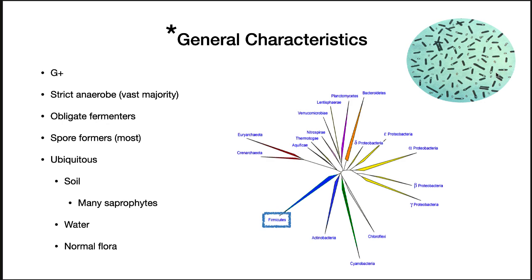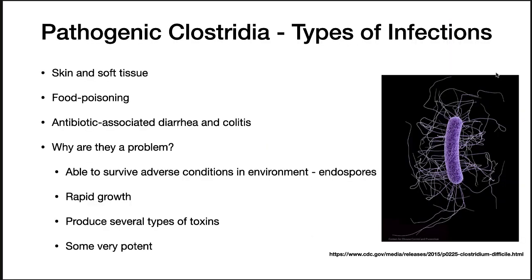They are also classified as firmicutes. Pathogenic Clostridia can cause several types of infections. They can invade the skin and soft tissues of the body. Some can cause food poisoning, while others cause antibiotic-associated diarrhea and colitis.